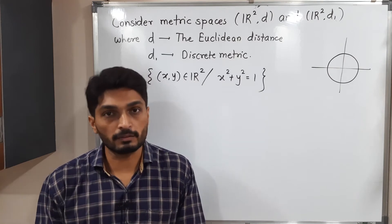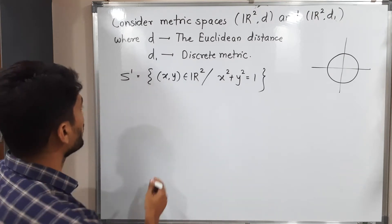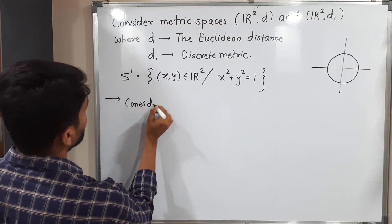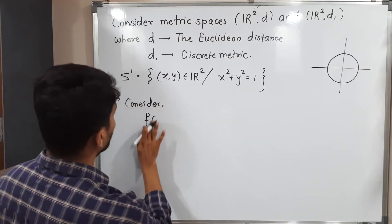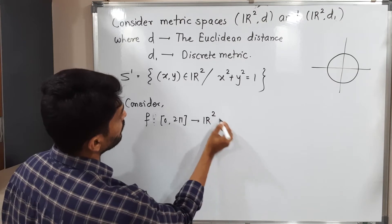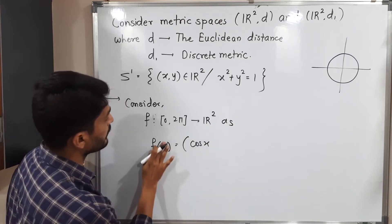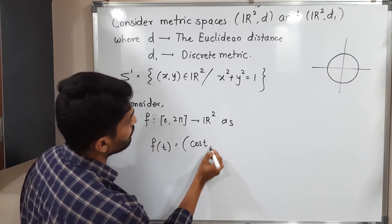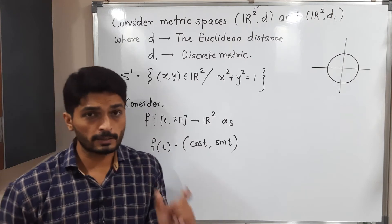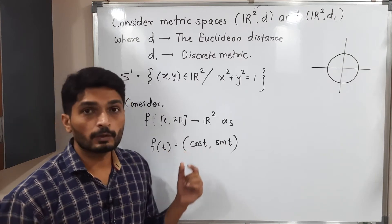We will focus on the Euclidean metric first, and after that we will go to the discrete metric. I am going to define a function F from the closed interval [0, 2π] to R², defined as F(T) = (cos T, sin T). So the X-component is cos T and the Y-component is sin T.